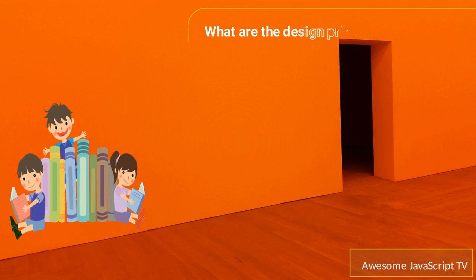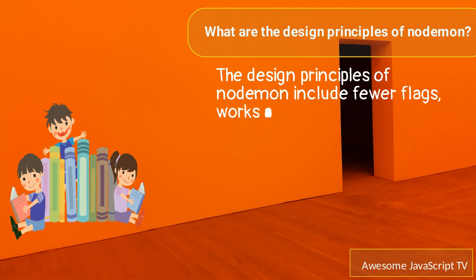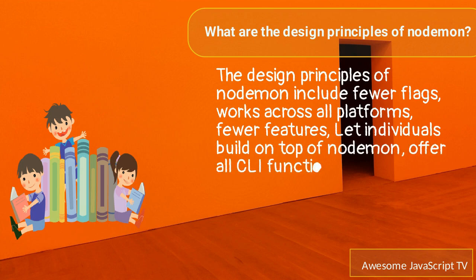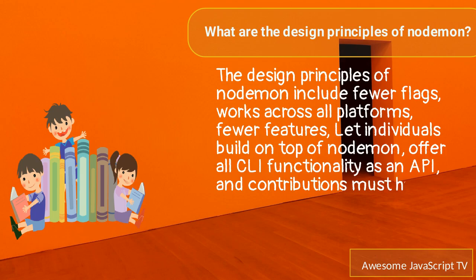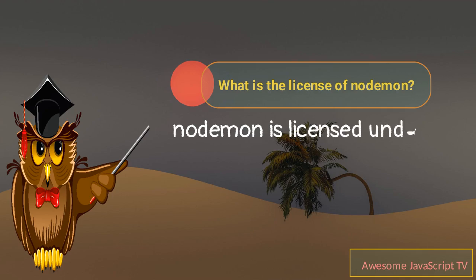The design principles of NodeMond include fewer flags, works across all platforms, fewer features, let individuals build on top of NodeMond, offer all CLI functionality as an API, and contributions must have and pass tests. NodeMond is licensed under the MIT license.